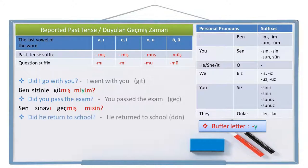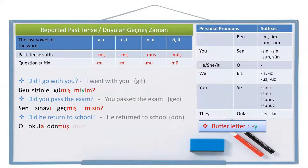Did he return to school? This is the positive question sentence. Let's write the positive sentence: he returned to school. Return is 'dön' in Turkish. Person pronoun he is 'o', school is 'okul', to school is 'okula', return is 'dön', returned is 'dönmüş'. Now we write the question suffix 'mü'. There is no person pronoun suffix for 'o'. So the sentence is: O okula dönmüş mü? Did he return to school?